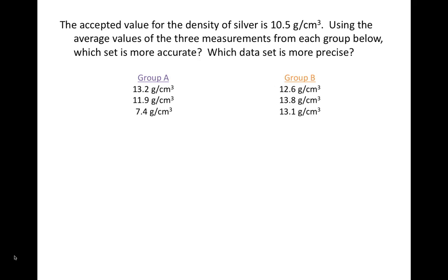So if we look at the values from group A and find the average value, we come up with an average of 10.8 grams per centimeter cubed. If we take the average value from the measurements of group B, we come up with a value of 13.2 grams per centimeter cubed.